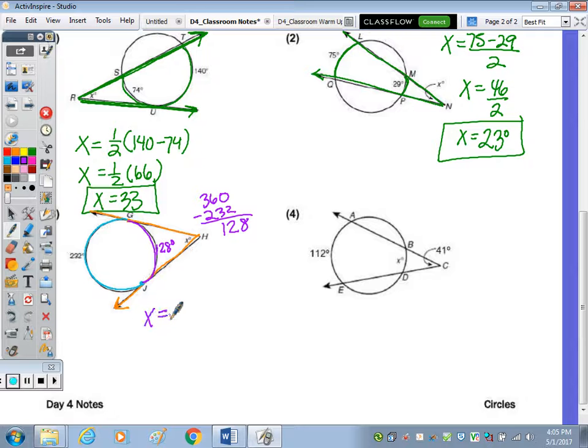So now X equals half the difference of 232 and 128. Subtracting means we're going to take half of 104 and X is equal to 52.